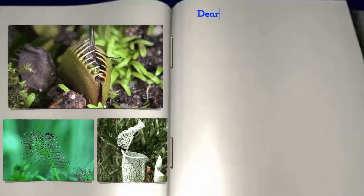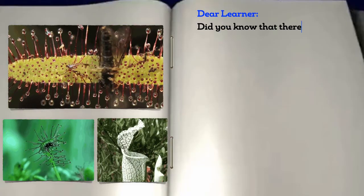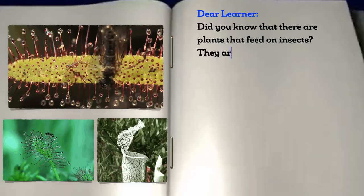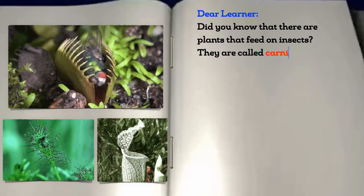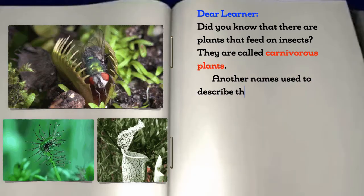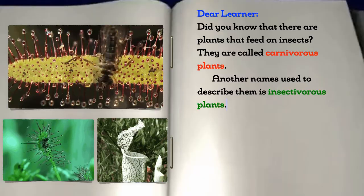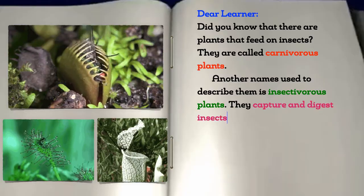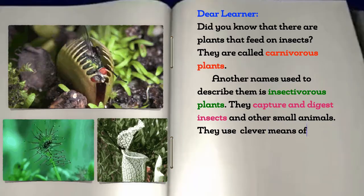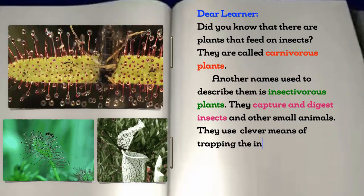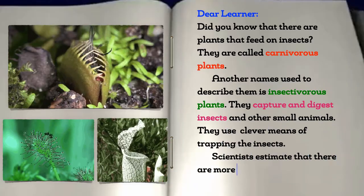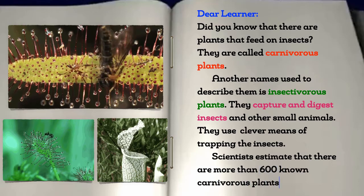Dear learner, did you know that there are plants that feed on insects? They are called carnivorous plants. Another name used to describe them is insectivorous plants. They capture and digest insects and other small animals. They use clever means of trapping the insects. Scientists estimate that there are more than 600 known carnivorous plants.